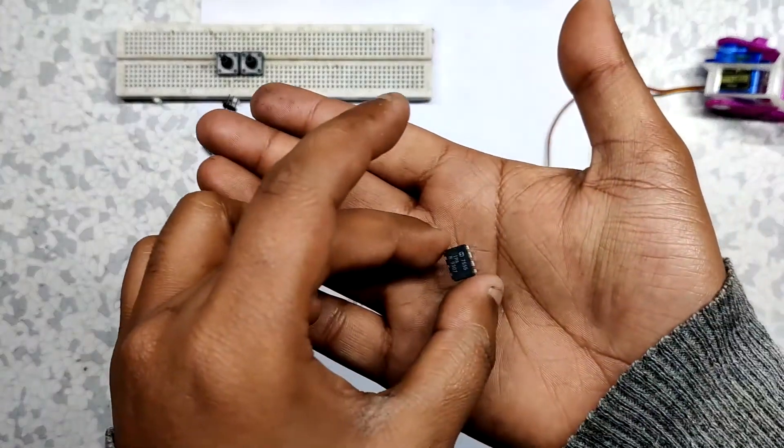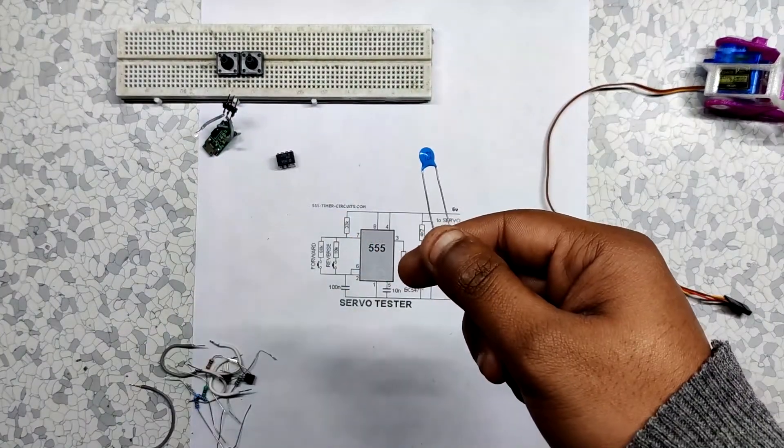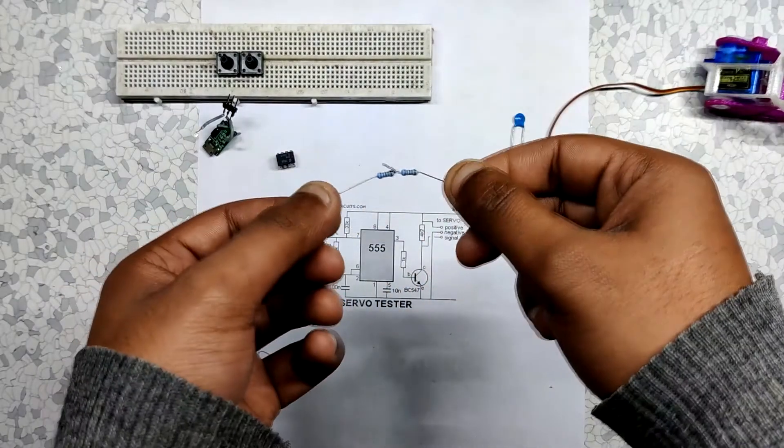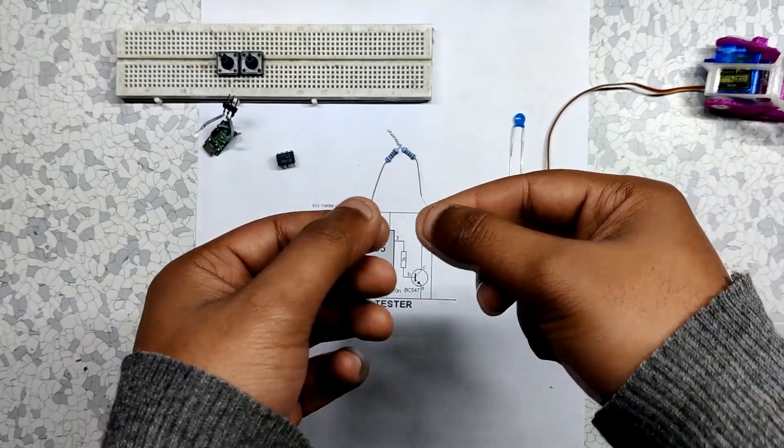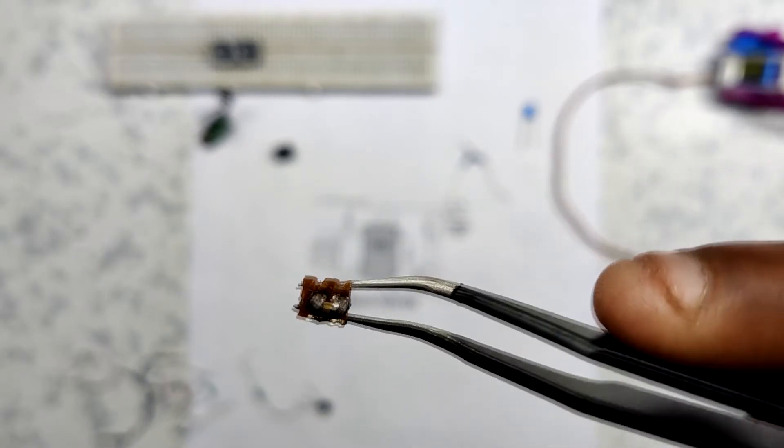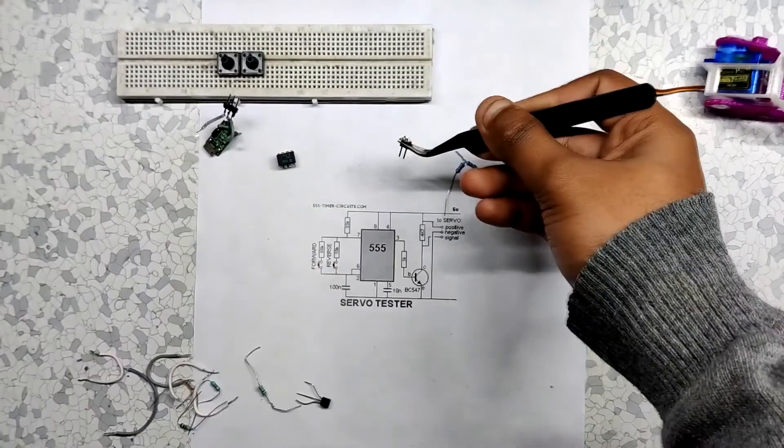A 555 timer IC which is in DIP 8 package. A 100 nF ceramic capacitor. 30 kilo ohm resistance, which is basically two 15k ohm resistances connected in series. 10 nF capacitor. I didn't have the THT register, so I soldered this small 0603 10 nF capacitor on a perf board and then added male header pins for putting this setup on a breadboard.